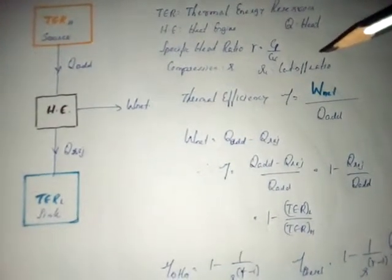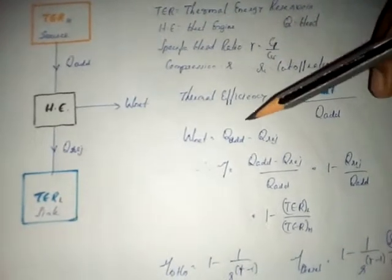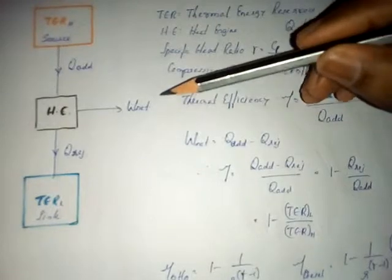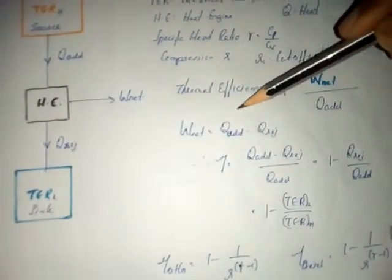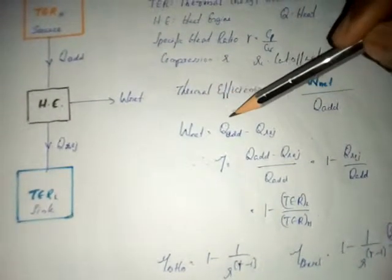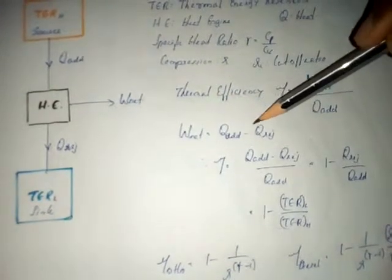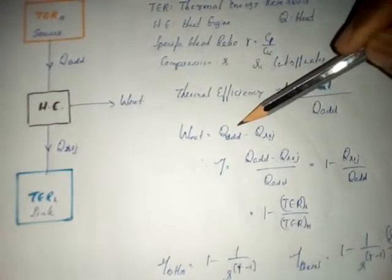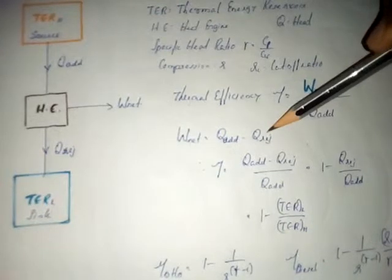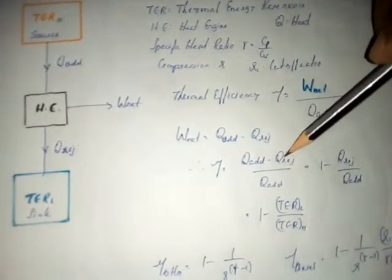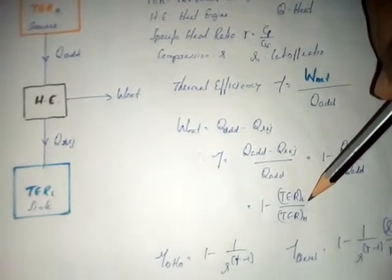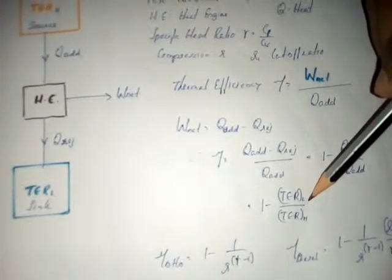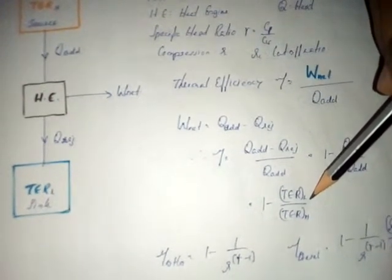A higher thermally efficient engine is also more economical and sustainable. We can express the relationship between heat added, heat rejected, and work produced as: Work = Q_added − Q_rejected. Substituting and simplifying this equation gives us the thermal efficiency expression.